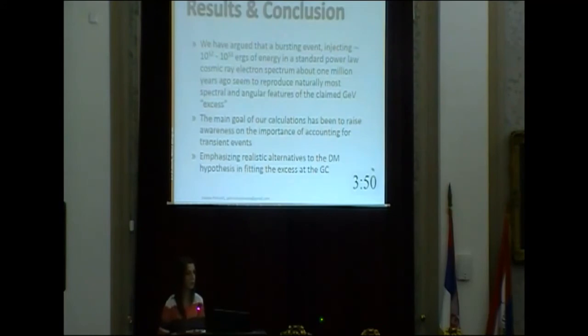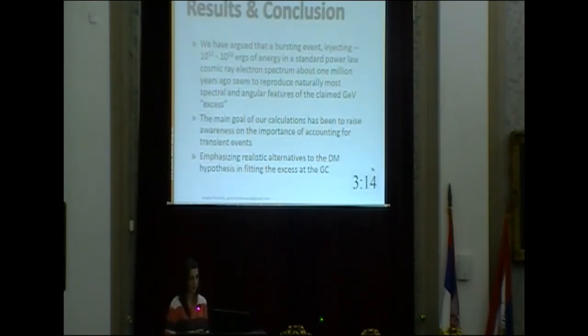To conclude: what we found during our investigation of such a bursting event is that by injecting 10 to the 52 to 10 to the 53 ergs of energy in a very standard power-law cosmic ray electron spectrum, in an event that could have happened one million years ago, we seem to reproduce most naturally the spectral and angular features of the claimed GeV excess. The whole investigation was to emphasise how important it is to take such transient events into your calculations when thinking about explaining the GCE excess, and to raise awareness of the importance of going through all different candidates that might explain the GCE excess until we have more reliable data.